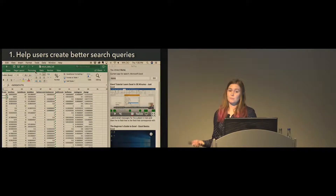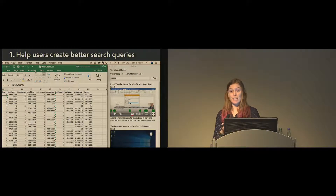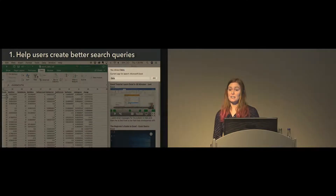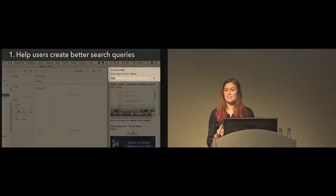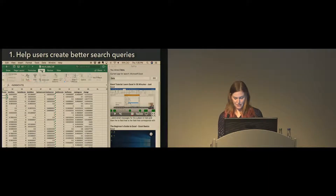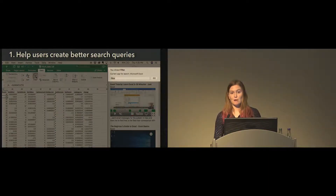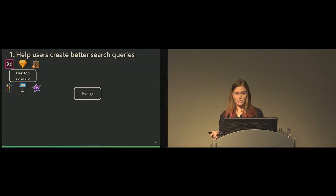To help users create better search queries, Replay gathers context about what you're doing in whatever application you're using. It detects the name of the application you're in and whatever tools or interface elements you click on. In this example, as I click around on different buttons in Excel, Replay shows the name of the tool I've clicked on and adds it to the search field to start you off with a query you could search for. It also automatically adds the name of your application to any search you issue.